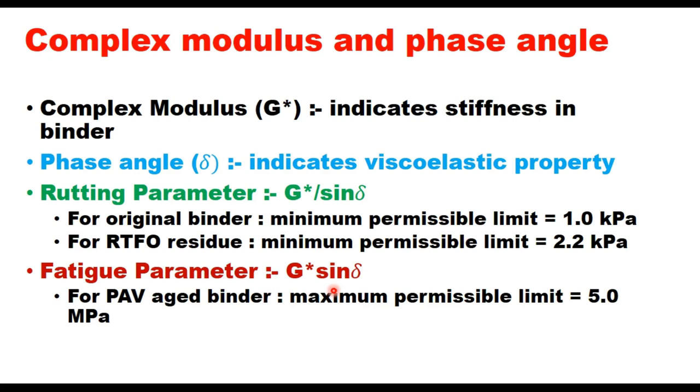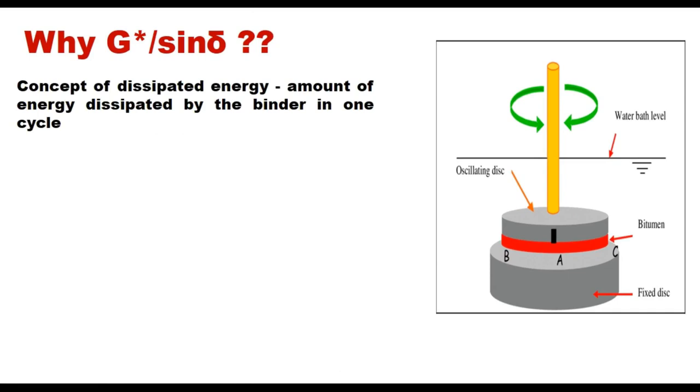The temperature which provides these values is the maximum temperature of the PG grading. Another parameter is fatigue parameter G* times sin(δ) which is evaluated after long-term aging and this we will discuss in the next video. The super pave rutting parameter G*/sin(δ) is measured in an oscillation test which is conducted at 10 radians per second frequency.